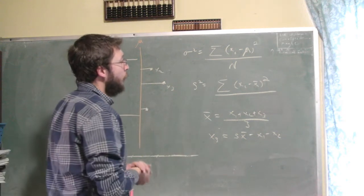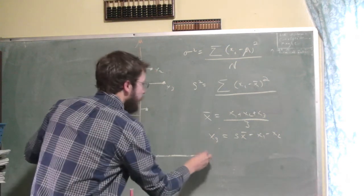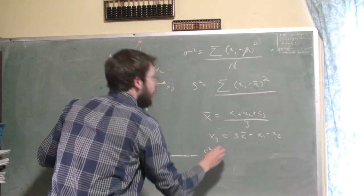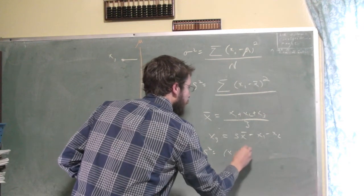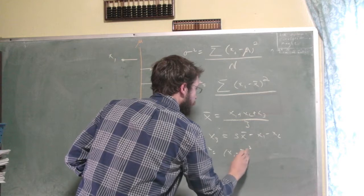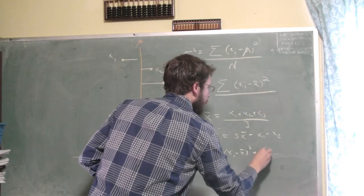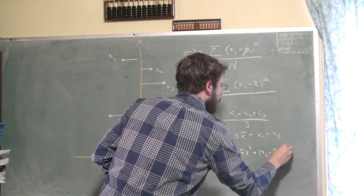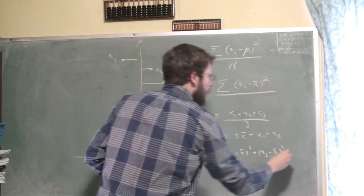So in this variance formula, what we're really looking at is this s squared can be written as x1 minus the mean squared plus x2 minus the mean squared, and then plus x3 minus the mean.